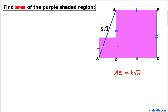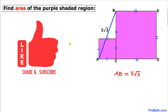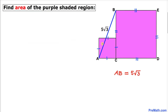Welcome to pre-math. In this video tutorial we have got these two purple squares of different sizes, as you can see in this figure, such that this length AB is five times square root of three. We are going to calculate the area of this whole purple shaded region. Please don't forget to give a thumbs up and subscribe. Let's go ahead and get started with the solution.